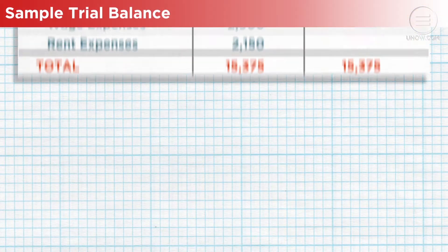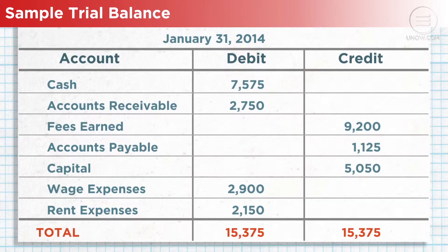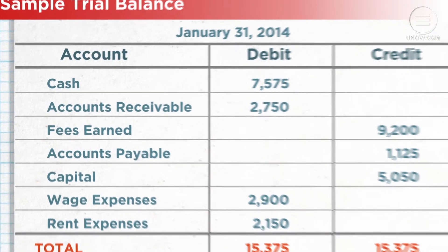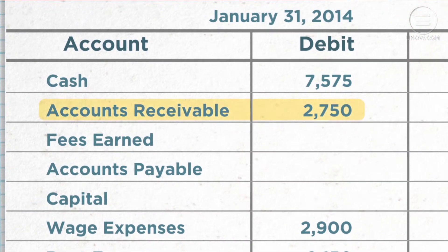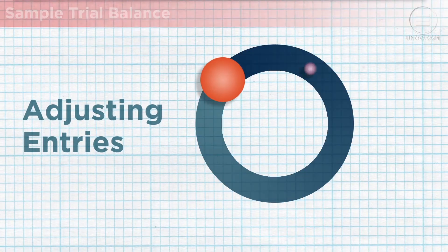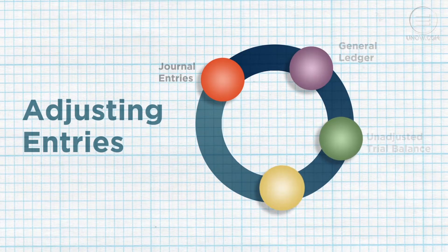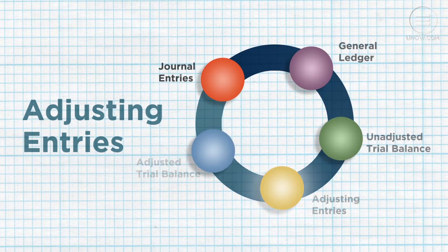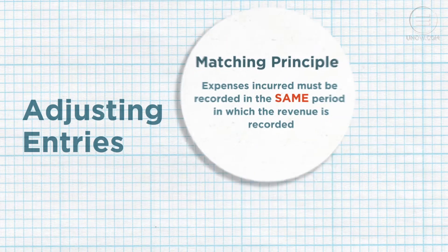Let's focus on adjusting accounting entries within the asset account accounts receivable. This is the account that shows money owed to a business. Adjusting entries are essential because they allow an organization to report financial data using the matching principle and the accrual basis of accounting.